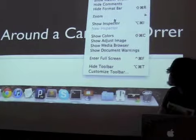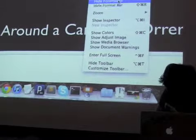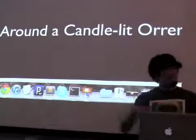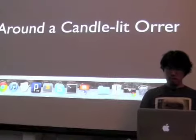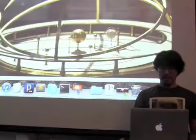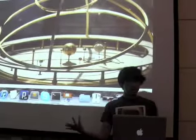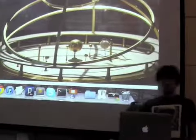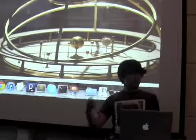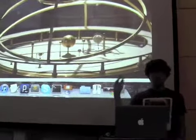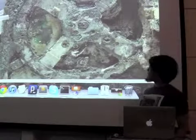Who knows what an orrery is, actually? There are a lot of devices that illustrate the position and motion of moons and things going around in the solar system — generally around the heliocentric model, which just means things are going around the sun.